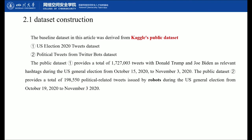I will now introduce our dataset construction method in detail. The baseline dataset in this article was derived from two public datasets. The first is the US Election 2020 tweet dataset, which provides a total of 1,727,003 tweets with Donald Trump and Joe Biden as relevant hashtags during the US general election from October 15, 2020 to November 3, 2020. The second dataset is the political tweet dataset, which provides a total of 198,550 political tweets issued by bots during the US general election from October 19, 2020 to November 3, 2020.